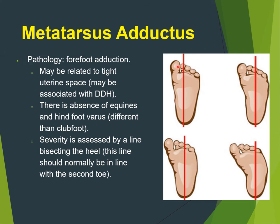The next condition is metatarsus adductus — forefoot adduction without equinus and without hindfoot varus, which distinguishes it from club foot. It may be related to tight intrauterine space, and is sometimes associated with DDH or torticollis.